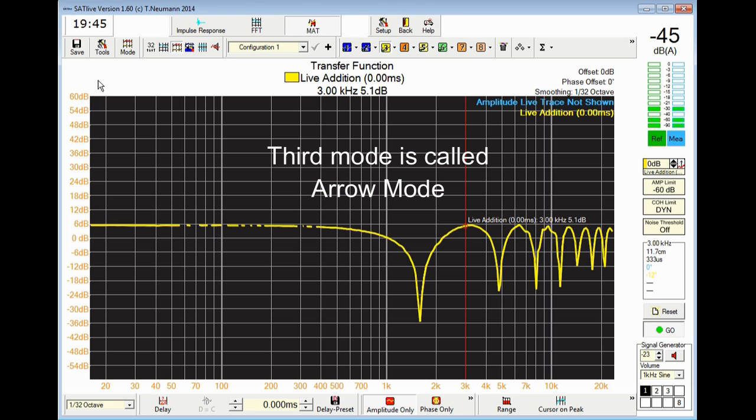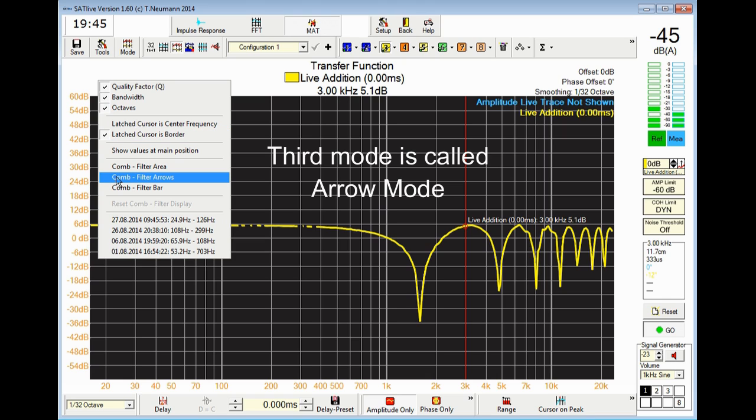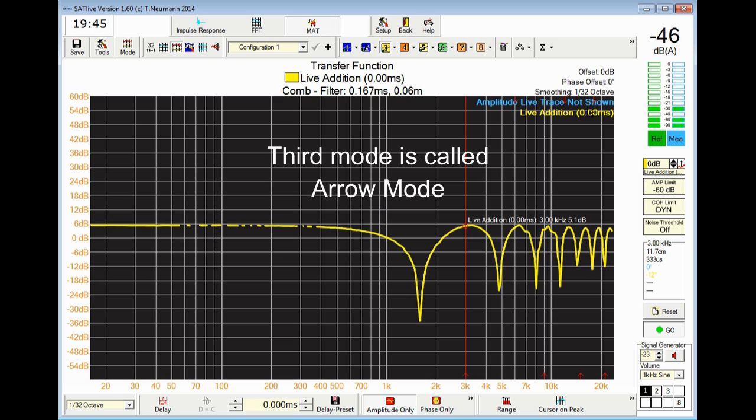Furthermore there is a third way to display it. It's called arrow mode. And as you might expect it shows arrows on the top for the location of addition and on the bottom for the location of the cuts.